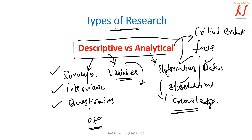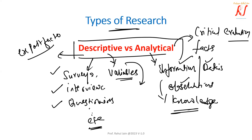Descriptive research is also called ex post facto research, meaning it is a descriptive research study. The main characteristic is that the researcher has no control over the variables, and can only report what has happened or what is happening. For example, the frequency of people who are shopping or the preferences of people — similar kinds of data.